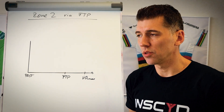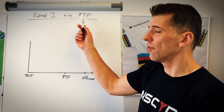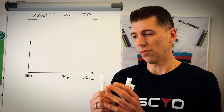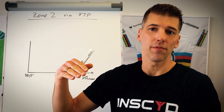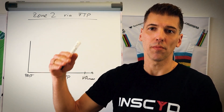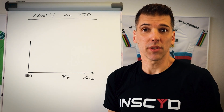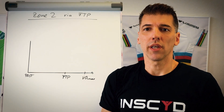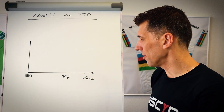So what happens when you define zone 2 training by your functional threshold power, which is what most people do? You have your functional threshold power, and then you take certain percentages from that — for example, 120% for VO2 max interval training, or approximately 70% for your easy base aerobic zone 2 training.